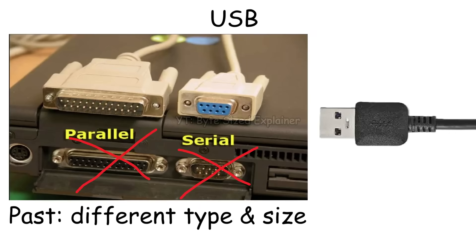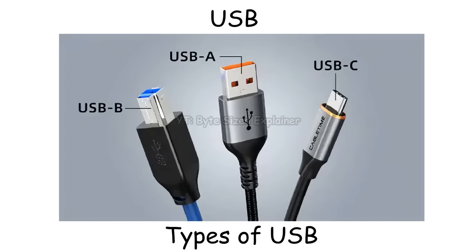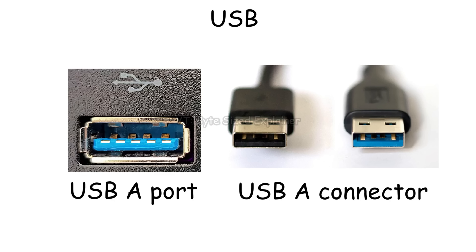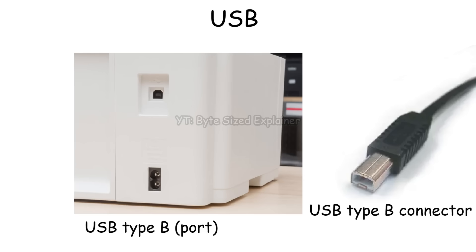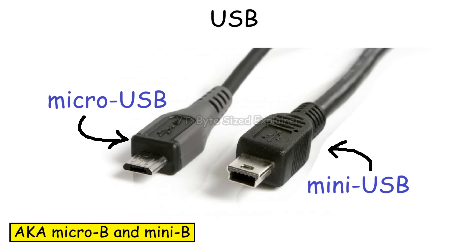That's why USB was introduced, and it showed up in three main shapes: Type A, Type B, and Type C. Type A is the standard rectangular one used for connection and data transfer. Type B is the bulky one, mostly used to connect computers to printers. And just so you know, Mini USB and Micro USB are actually just the smaller types of USB Type B.